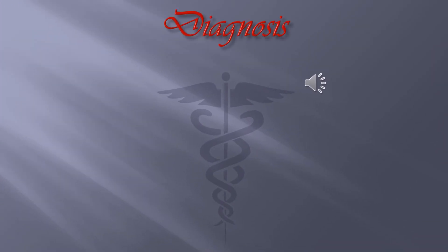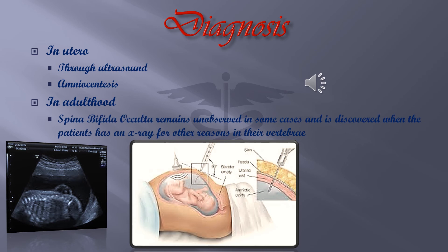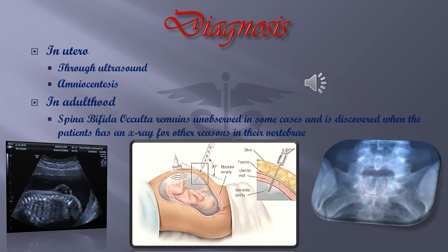Diagnosis: in utero, it is diagnosed through an ultrasound or an amniocentesis. In adults, it is found via x-rays, as the patient may go to get an x-ray for other reasons and find that they have Spina Bifida Occulta.